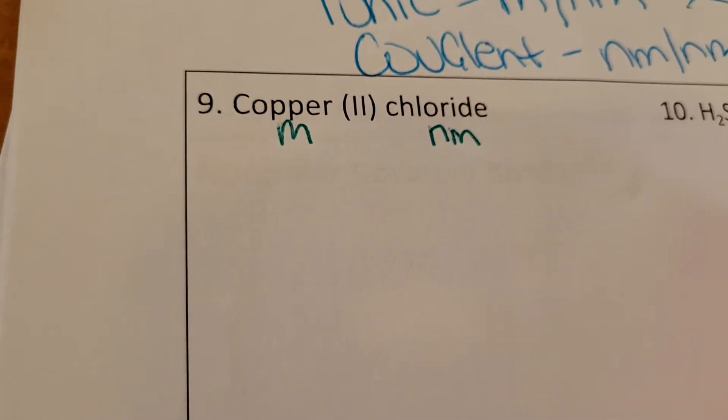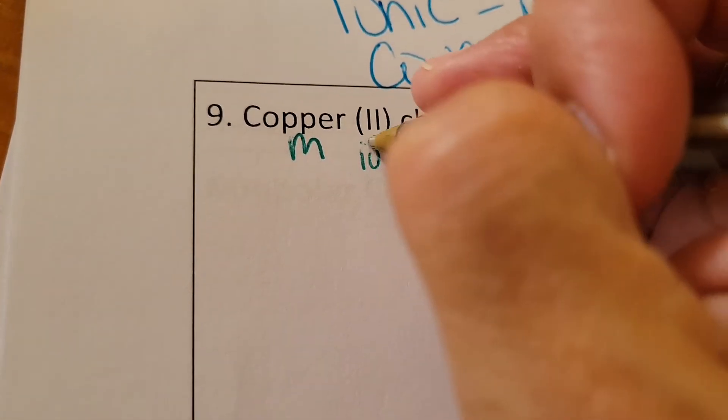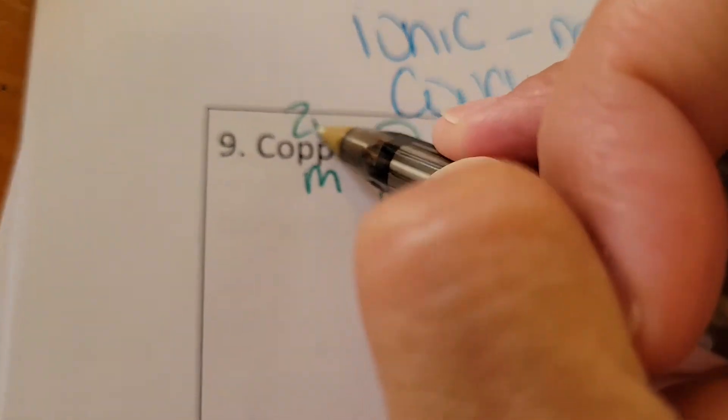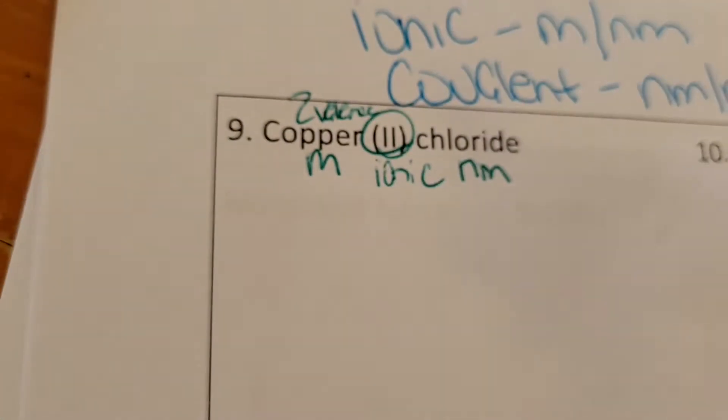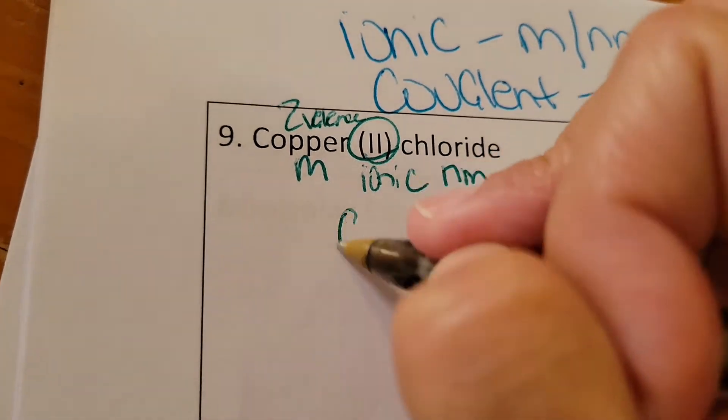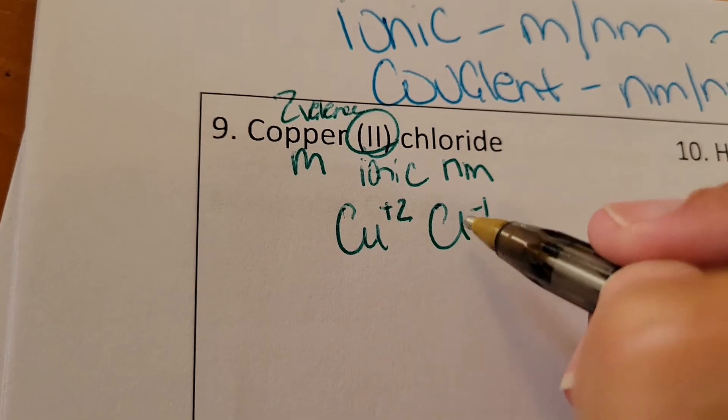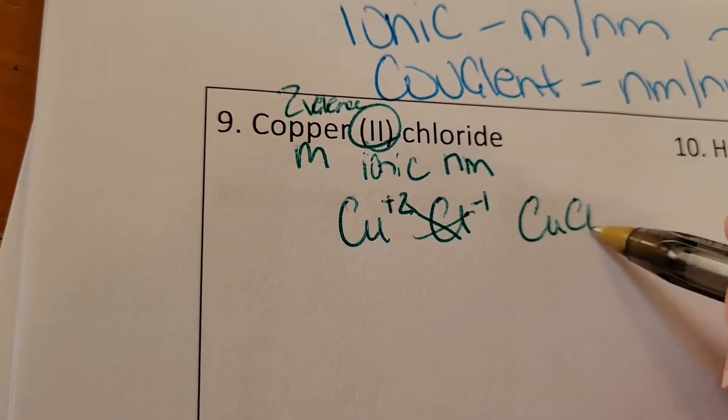So copper is a metal, chloride is a non-metal, so this is going to be ionic. Roman numeral two tells you that there's going to be two valence. It also tells you that the copper has a plus two charge and chlorine we know has a minus one charge. So it's going to be CuCl2.